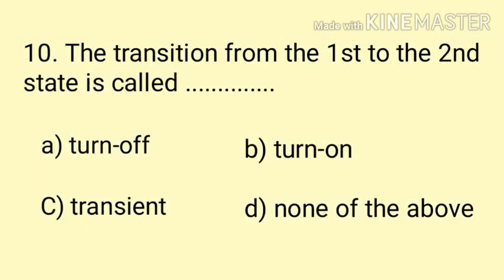Question number 10: The transition from the first to the second state is called __. Option A: turn off, Option B: turn on, Option C: transient, and Option D: none of the above. Here the transition from the first to the second state is called turn on. The correct answer is option B.